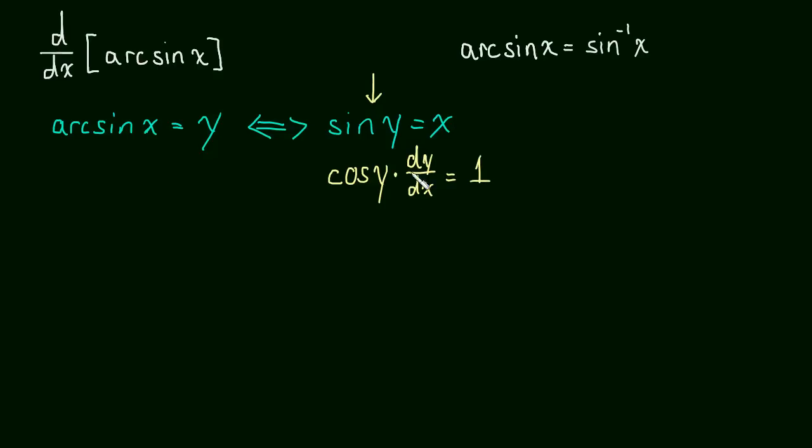And this is equal to the derivative of x, which is just one. And now dy dx, that's the derivative, that's what we're after. So let's try and solve for that. We're going to get dy dx is equal to 1 over the cosine of y. And y is equal to arc sine of x, so this is 1 over the cosine of the arc sine of x.